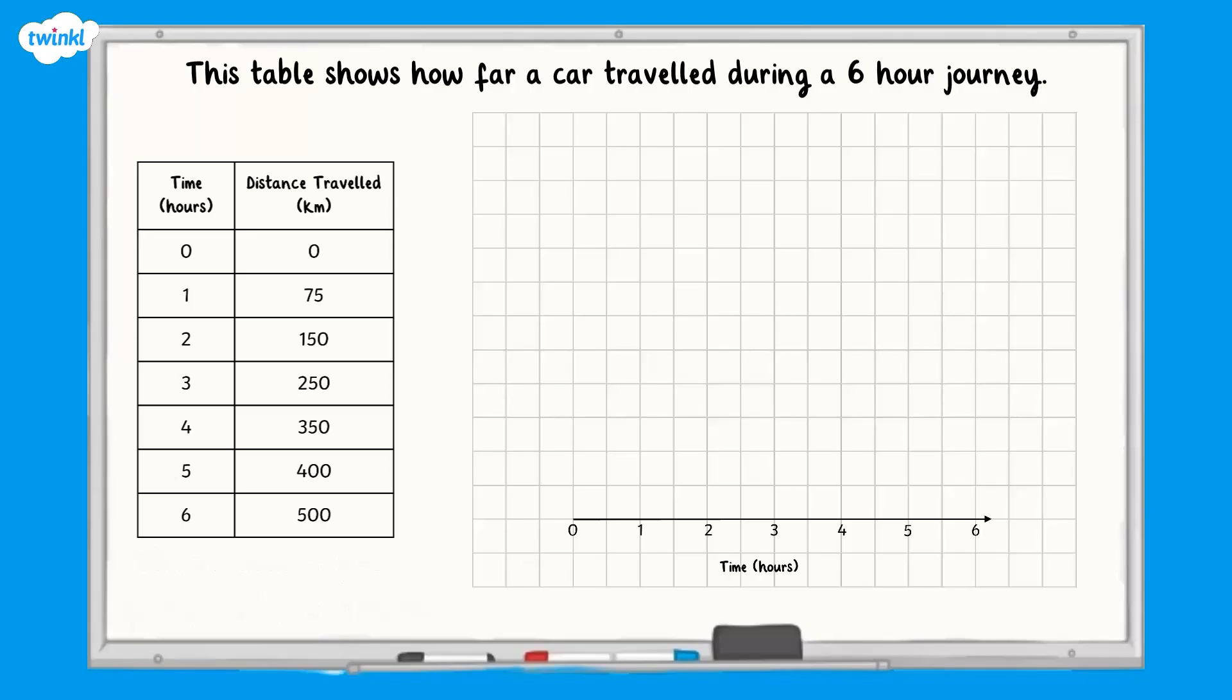If we use one square for each 100 kilometers, our graph will be too small. We could use one square to represent 50 kilometers.